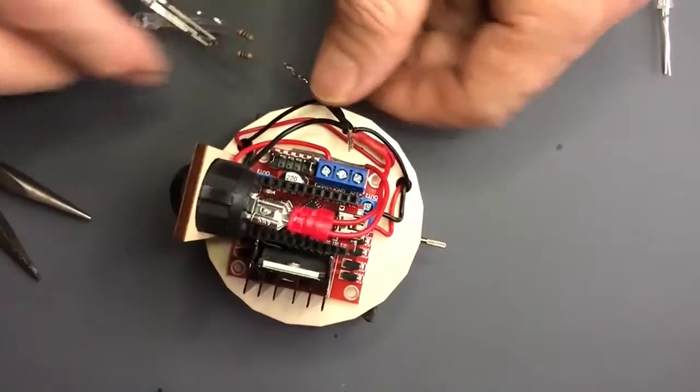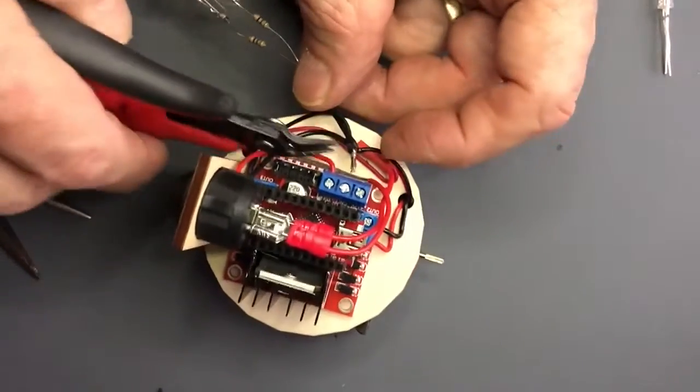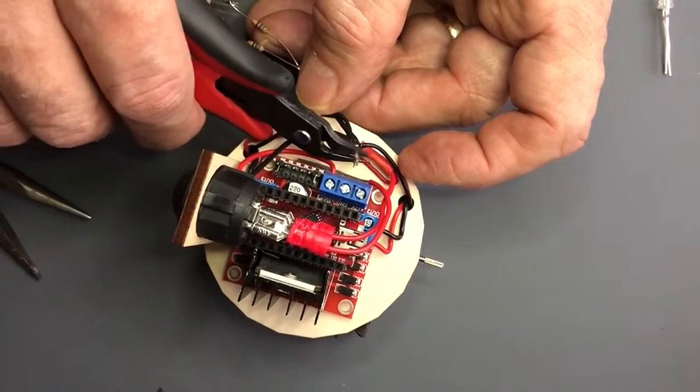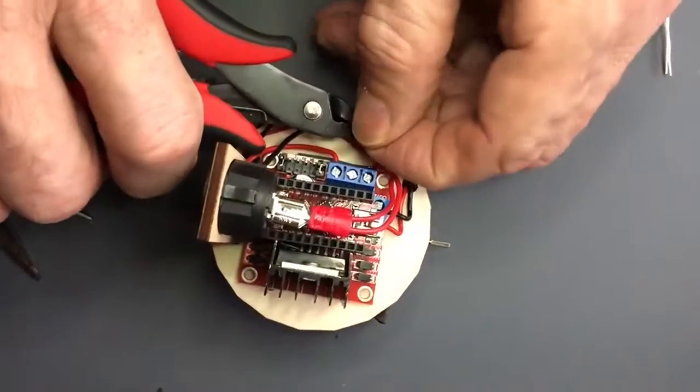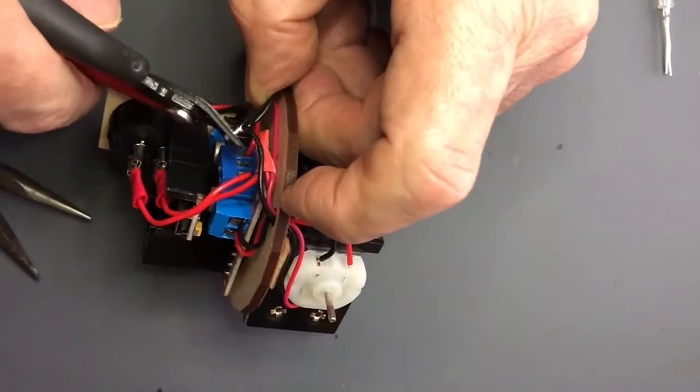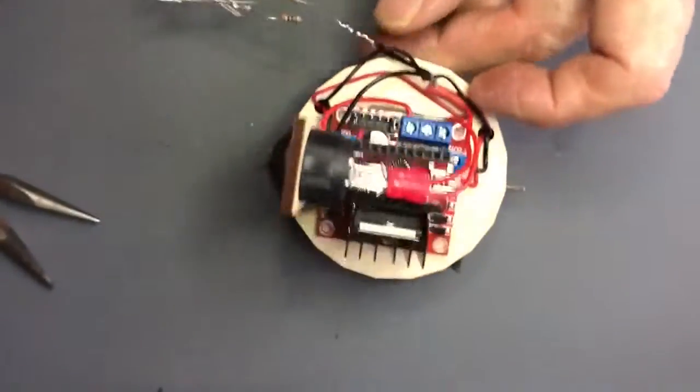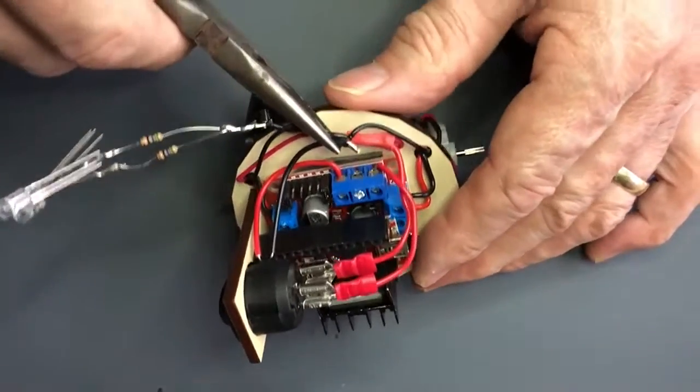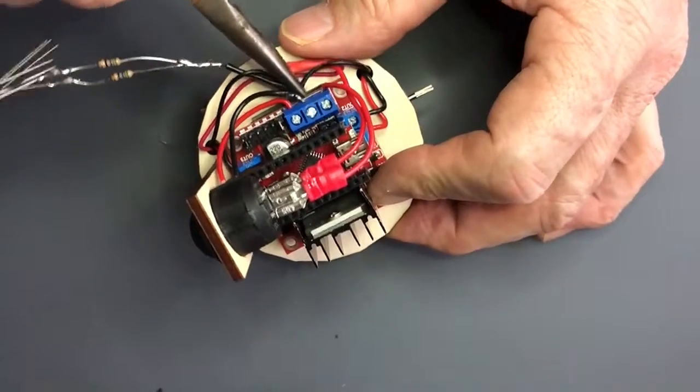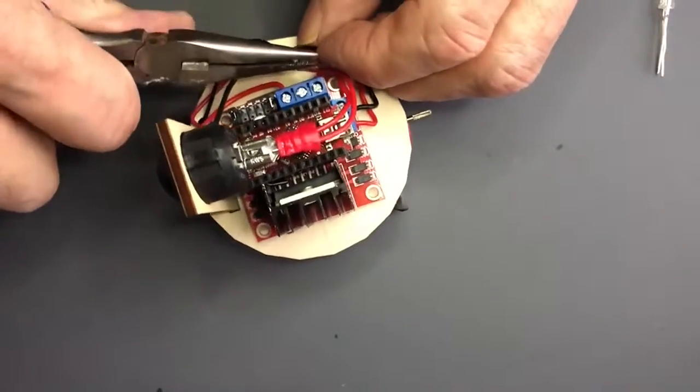So once that cools we're ready to insert it into our center post in the motor controller. I just want to trim this a little bit. I'm going to trim this a little bit more. I need to flatten it out. Just press firmly.